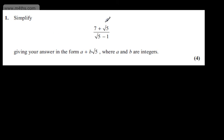In question one, we're asked to simplify 7 plus root 5 over the quantity root 5 minus 1, giving our answer in the form a plus b root 5, where a and b are integers. The question carries four marks.